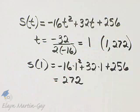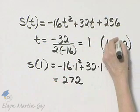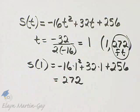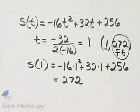What is the maximum stone's height? It is 272 feet. It is this Y value, or S of T value, and this T value gives us when it occurs. So it occurs at 1 second, but the maximum height is 272 feet.